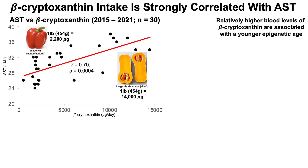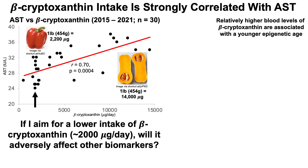I don't want to eliminate beta-cryptoxanthin entirely, considering that higher blood levels are associated with younger epigenetic age. So most recently I've been eating more red bell peppers and almost no butternut squash for the past year or two — aiming for some, but not too much. When looking at this data, if I aim for a lower intake of about 2,000 micrograms per day, it may improve my AST levels, if correlation is indeed causation. But I don't want to just improve one biomarker and make three or four others worse — I want to see if the net effect on my biomarkers is positive or negative.